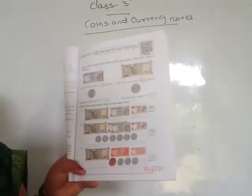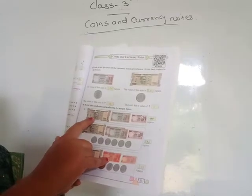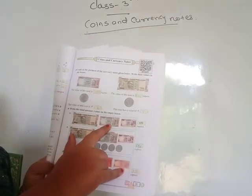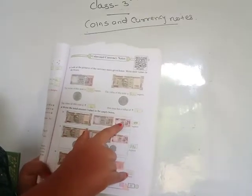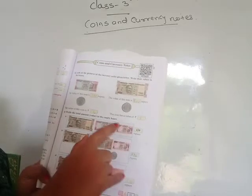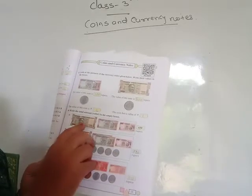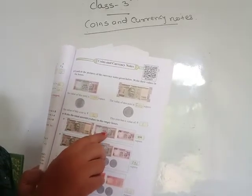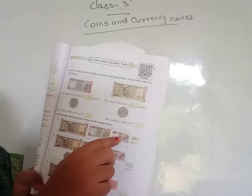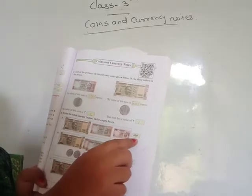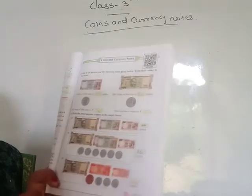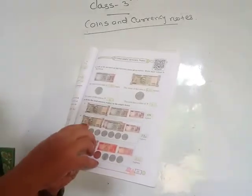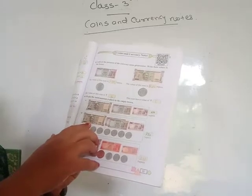You see here: one 500 rupees note, one 100 rupees note, and one 50 rupees note. Total: 500 plus 100 is 600, and 600 plus 50 means the answer is 650 rupees.